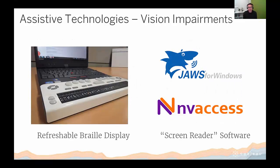Let's look at assistive technologies for people with vision impairments. On the left we have a refreshable braille display, which displays in braille lines of text that appear on the computer. On the right are logos for screen reader software — applications that read computer-generated voice text from a screen. The most widely used is JAWS, available for Windows. Others include NVDA, an open-source free version also for Windows, and built-in options: Narrator for Windows and VoiceOver for Macintosh.